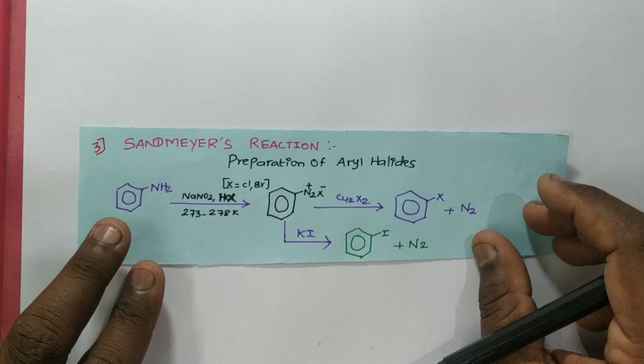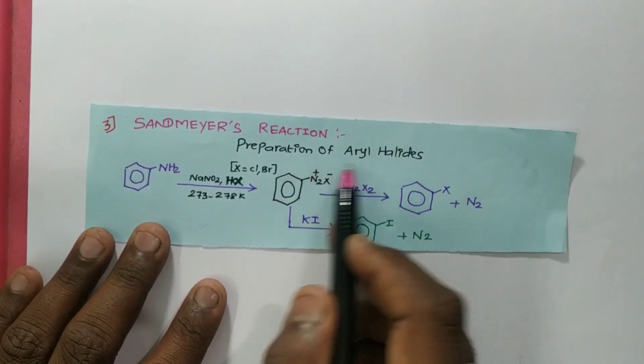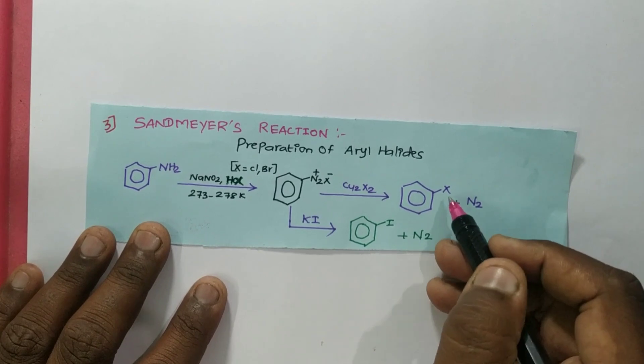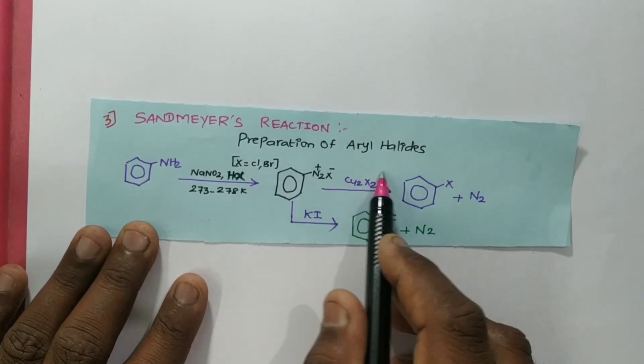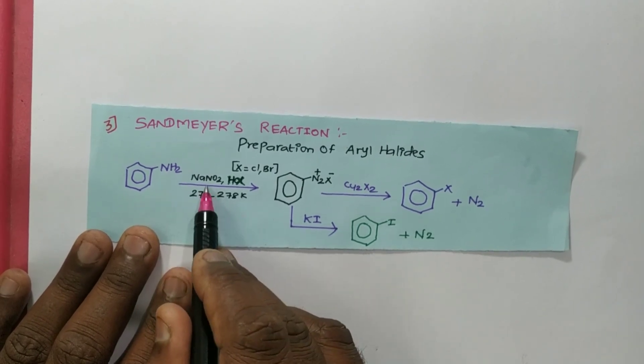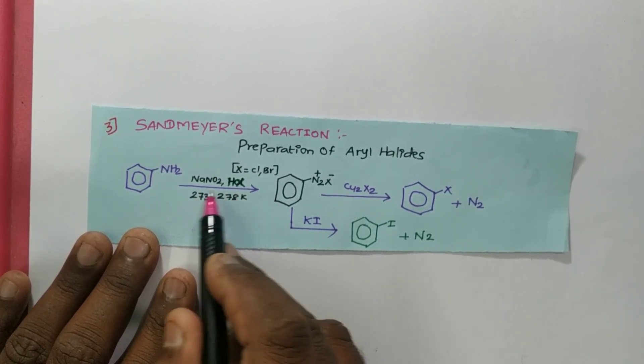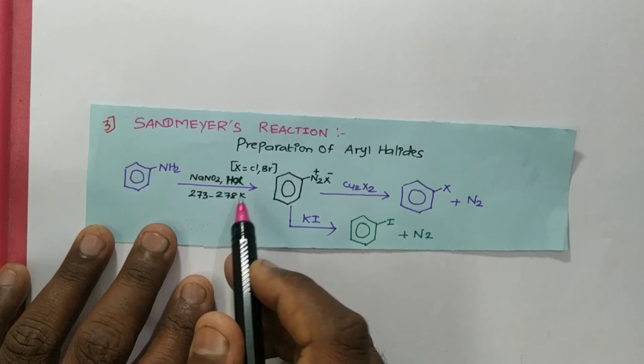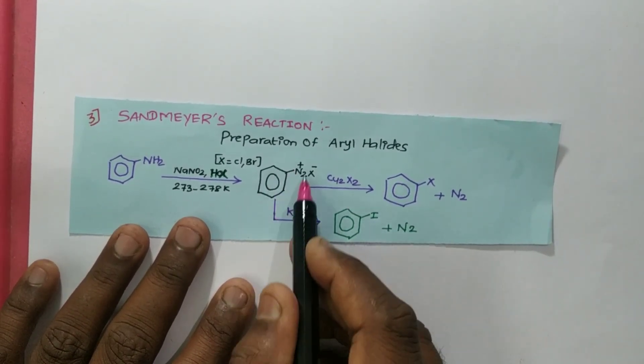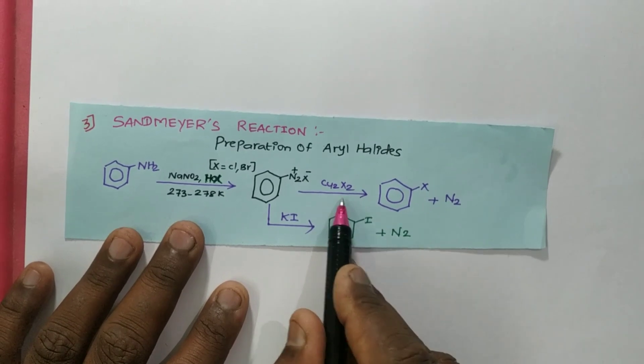The third one is the Sandmeyer reaction. It is used for preparation of aryl halides, which may be aryl chloride or bromide. Using Sandmeyer reaction, we can prepare these. Aniline will react with sodium nitrite NaNO2 and HX, where HX may be HCl or HBr, in presence of very low temperature like 273 to 278 Kelvin, about 5 degrees Celsius. This forms an unstable compound like diazonium salts, benzene diazonium salt.